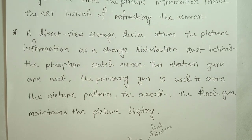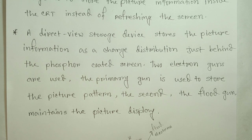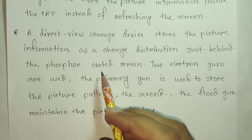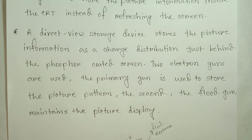A Direct View Storage Tube stores the picture information as a charge distribution just behind the phosphor coated screen. That means, if we have the picture information, what we have is the charge distribution just behind the phosphor coated screen.